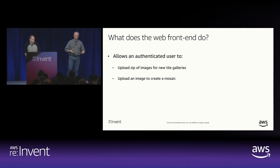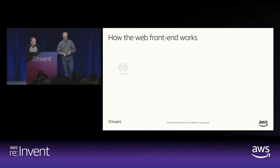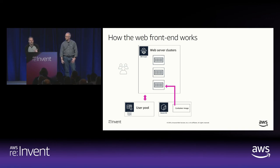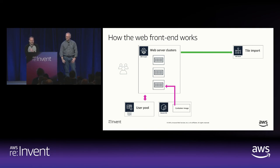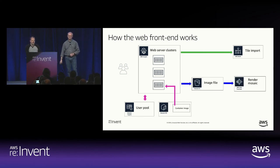Now for the final part — the web front end. We want users to be able to upload images for new tile galleries and create mosaics, but only for authenticated users. We're going to use Fargate to manage all of our compute power using containers from ECR, and Amazon Cognito user pools to authenticate all users coming to the system. This is the system that interacts with all our other subsystems — it submits jobs to Batch to create new tile galleries and works with Step Functions to render mosaics.